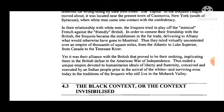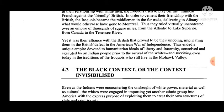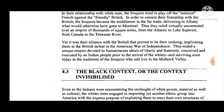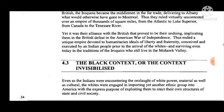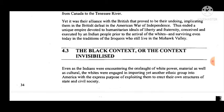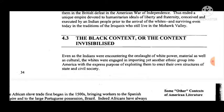In order to cement their friendship with the British, the Iroquois became the middlemen in the fur trade, delivering to Albany what would otherwise have gone to Montreal. Thus they ruled virtually uncontested over an empire of thousands of square miles, from the Atlantic to Lake Superior, from Canada to the Tennessee River. Yet it was their alliance with the British that proved to be their undoing, implicating them in the British defeat in the American War of Independence. Indeed, a unique empire devoted to humanitarian ideas of liberty and fraternity, conceived and executed by an Indian people prior to the arrival of the whites, and surviving even today in the traditions of the Iroquois, who still live in the Mohawk Valley.